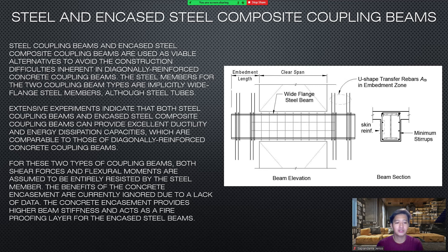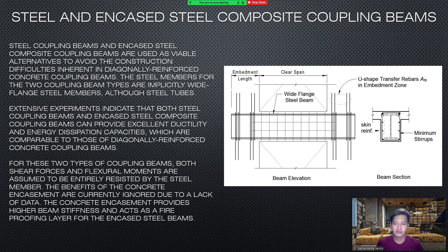Steel coupling beams and NK steel composite coupling beams are used as viable alternatives to avoid the construction difficulties inherent in diagonally reinforced concrete coupling beams. The steel members for both coupling beam types are typically wide flange steel members, although steel tubes are also used. Both steel coupling beams and NK steel composite coupling beams can provide excellent ductility and energy dissipation capacities, comparable to those of diagonally reinforced concrete coupling beams. For these two types, both shear forces and flexural moments are assumed to be entirely resisted by the steel member. The benefits of the concrete encasement are currently ignored due to a lack of data, though the concrete encasement provides higher beam stiffness and acts as a fire-proofing layer for the encased steel beams.